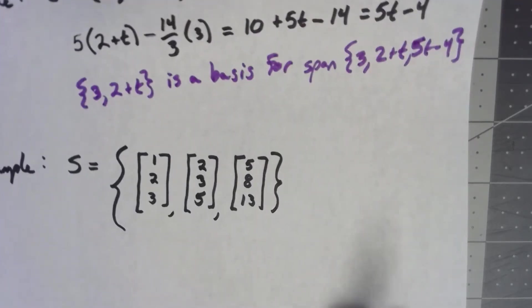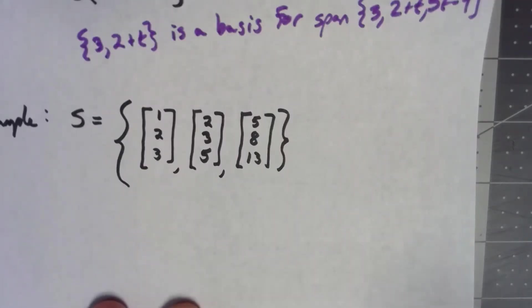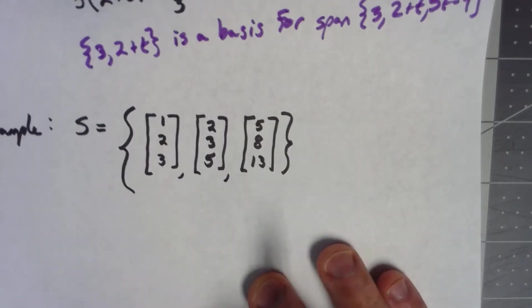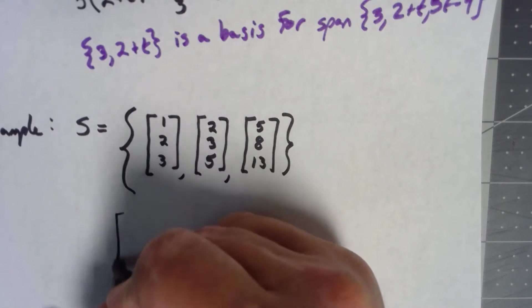Let's take a look at another one here. I've got these three vectors, and certainly the span of those vectors is a subspace of R3. And again, there's a linear combination here.